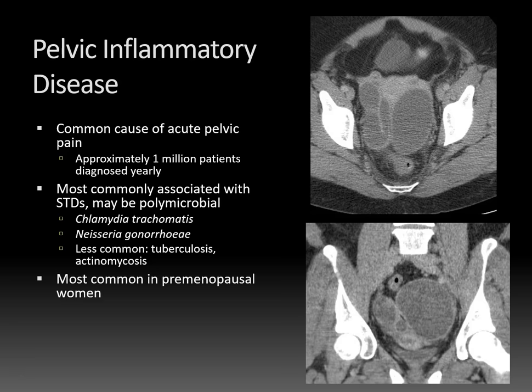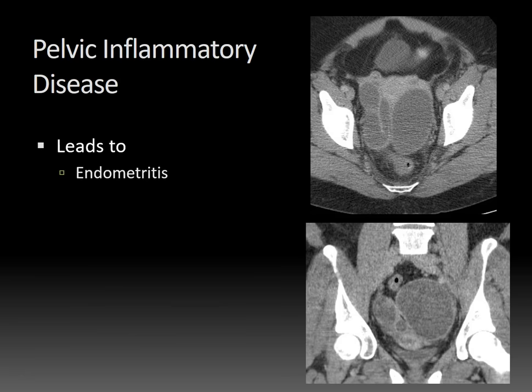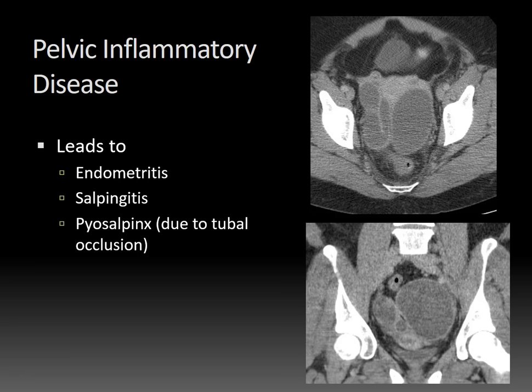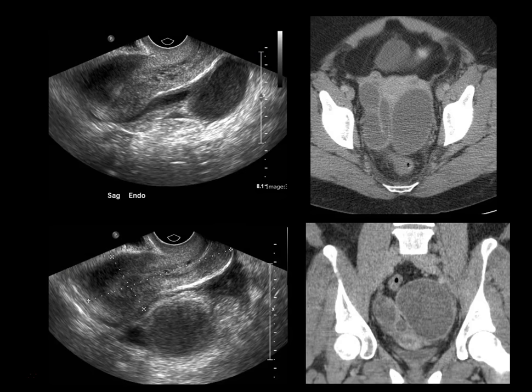PID is most common in premenopausal women, and usually it's an infection that begins as an ascending infection from the vagina or the cervix. This infection will lead to endometritis, which is inflammation of the endometrium; salpingitis, which is inflammation of the fallopian tubes; pyosalpinx, when the tube becomes obstructed and fills with pus; and then tubovarian abscess due to periovarian adhesions.